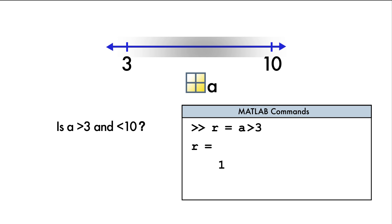Now, what if the problem we were solving had multiple conditions that need to be satisfied? For example, how can we determine if A is both greater than 3 and less than 10?